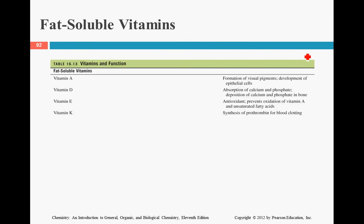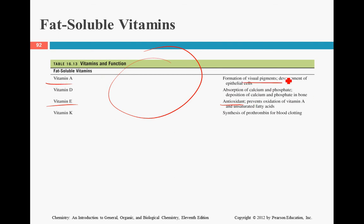Here is a list of fat-soluble vitamins. Note that they do not bond to an enzyme, so they are not actually coenzymes, but they are important for health. For instance, vitamin E is an antioxidant and vitamin A helps with vision.